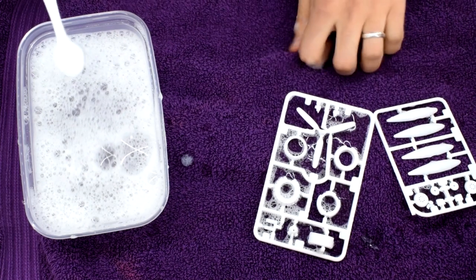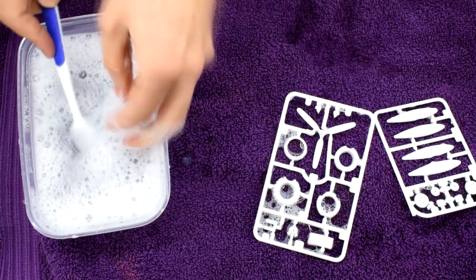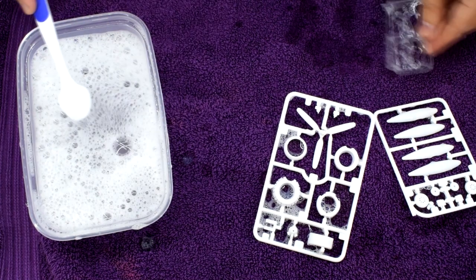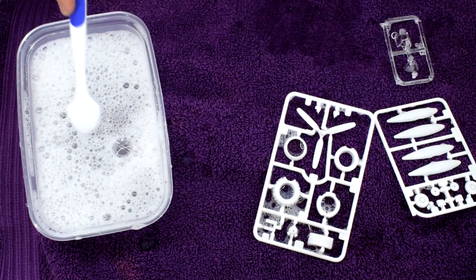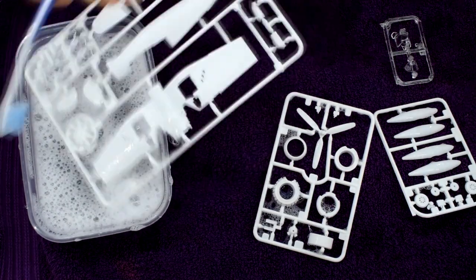First, I began the build by washing the plastic parts in warm soapy water. This step helps to remove any dirt or oil left over from the molding process. The plastic will then have a good clean surface for the paint and cement to stick to.